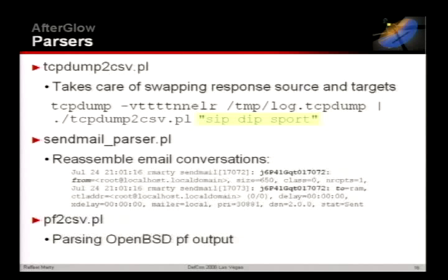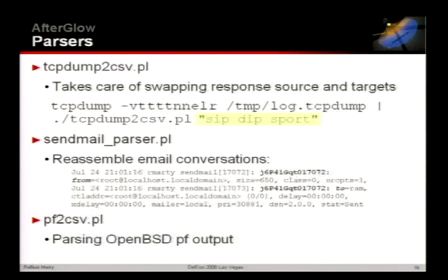The SendMail parser addresses the fact that SendMail was certainly not designed with logging in mind. For every email, they generate two log entries: one tells you the email came from someone, and the other tells you it went to these people. The way you connect them is the message ID. I wrote a Perl script that remembers all those message IDs and whenever it finds the combo of to and from, it outputs one entry showing both in one line so you can visualize connections. The third parser is packet filter to CSV, which I'll use in a bit.